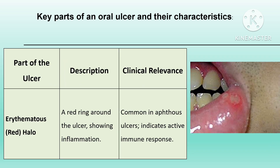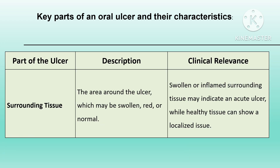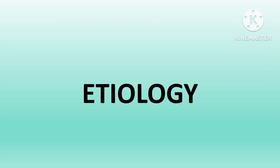A ring-like red ring present around the ulcer, caused by inflammation, is called the erythematous or red halo. This halo signifies the body's immune response to the ulcer — the distinct red halo is typical in aphthous ulcers, showing active inflammation. Regarding surrounding tissue, the area around the ulcer may appear swollen, red, or normal. Inflamed or swollen surrounding tissue suggests an acute active ulcer, while healthy surrounding tissue indicates a more localized issue.